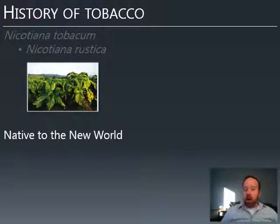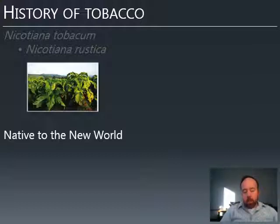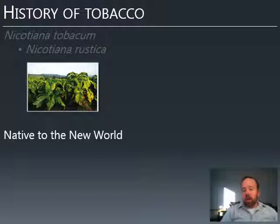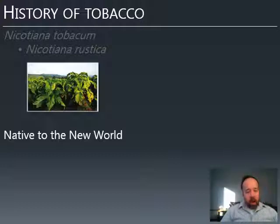Tobacco is native to the New World — the Americas. Nicotiana tobacum is actually native to Central and South America, and rustica to North America. The original European colonists grew the varieties native to those areas. Nicotiana tobacum is in most ways a better product in terms of nicotine content and ease of cultivation. It was native to the New World, so Native Americans had extensive experience with tobacco plants, while it was entirely new to Europeans when they first started arriving in the late 15th century.